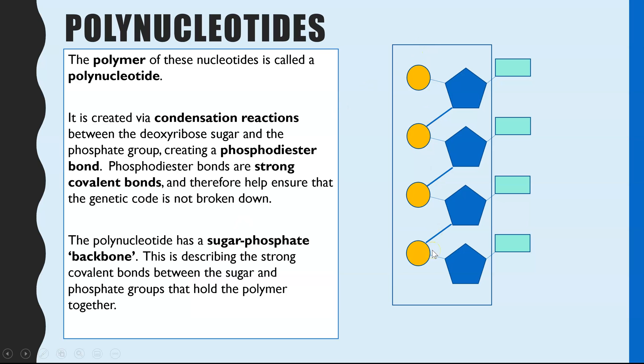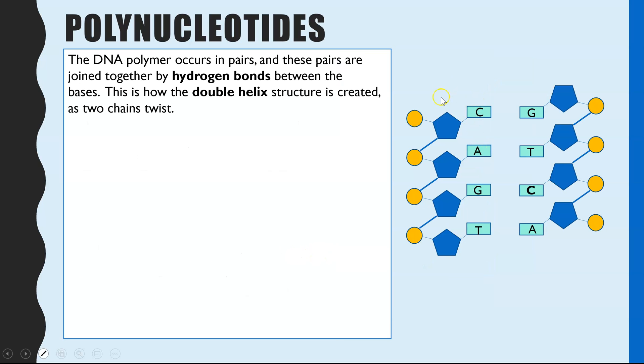DNA though doesn't just exist as one polymer in the nucleus of our cell. We have two polymer chains—that's double-stranded—and those two double strands are held together and they twist and coil up to make a double helix structure. So I'm going to go through how it's possible to create that structure.